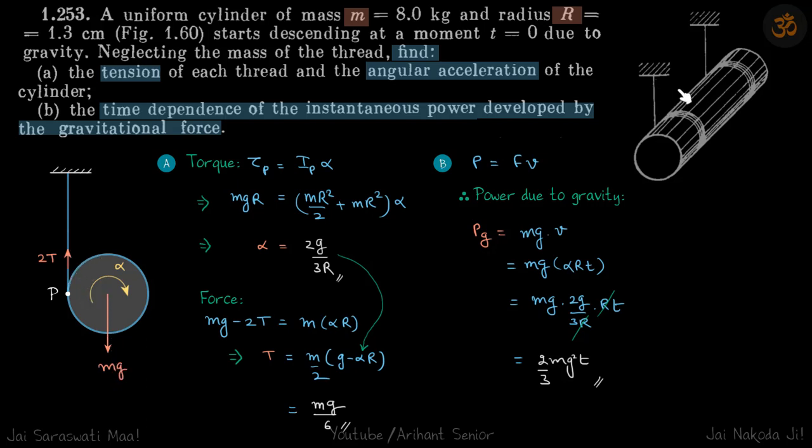upwards, so T each. Let's say it's rotating by alpha. Torque about point P - because we don't know the value of tension, it's better to write the torque with respect to P.